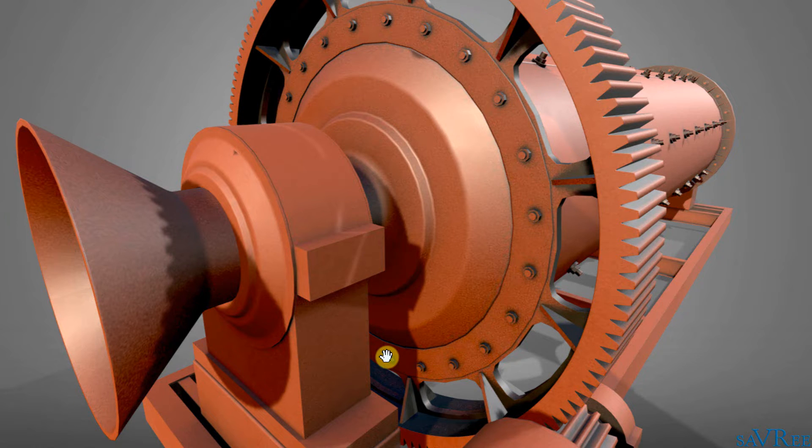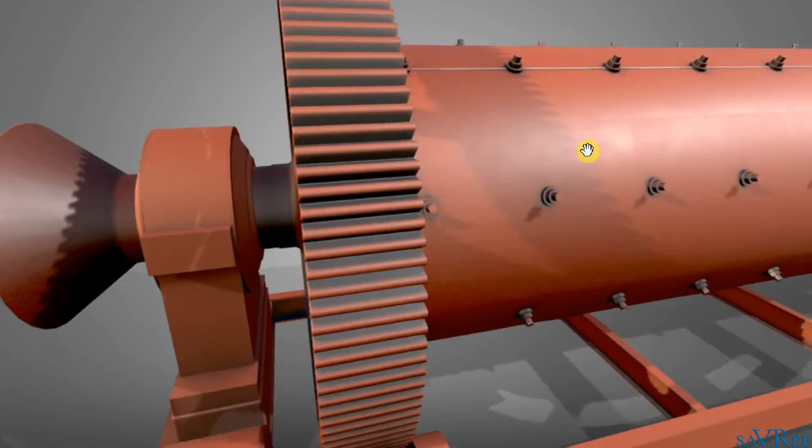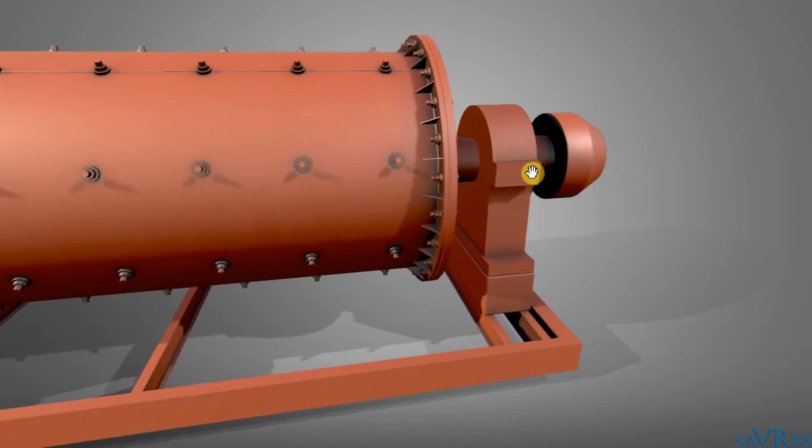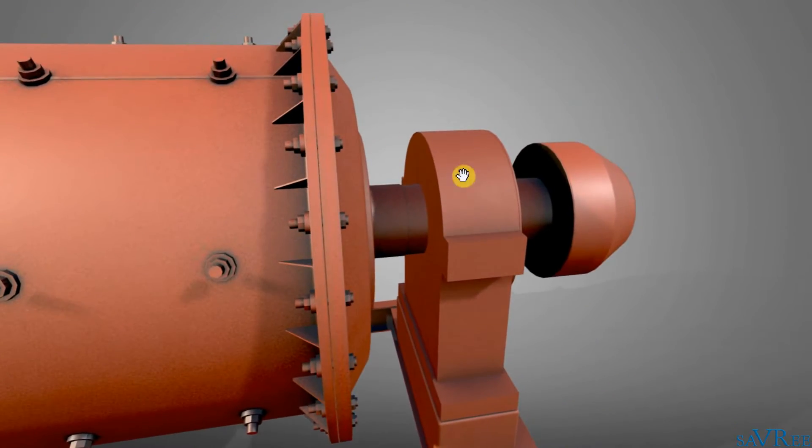We have two bearings that are used to support the weight of the drum and everything contained within it. Here is one bearing, and the other bearing is at the opposite end. Here is the other bearing.